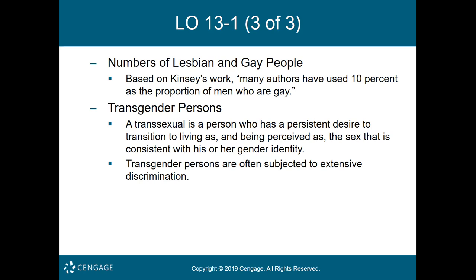Third, they receive extensive hormone treatments to align their bodies with the opposite gender as much as possible — a process that may continue for the rest of their lives. Female-to-male transgender people would take male hormones to encourage facial and body hair growth, while male-to-female transgender people would take female hormones to encourage softening of body tissue and redistribution of body fat. The fourth step includes undergoing surgery where genitals and other areas of the body are surgically altered to more closely resemble the opposite gender.